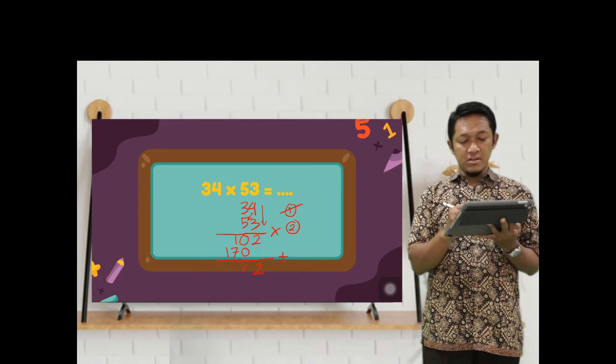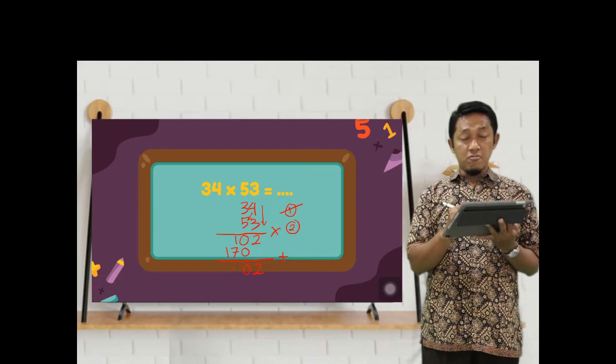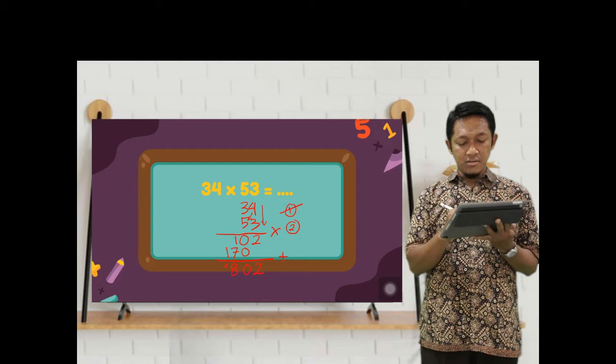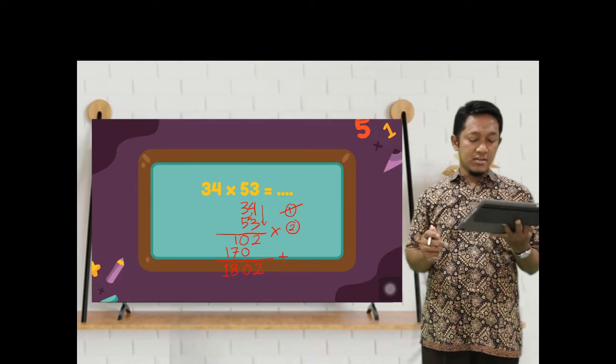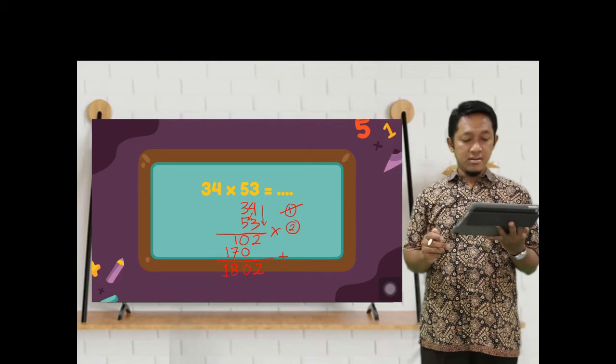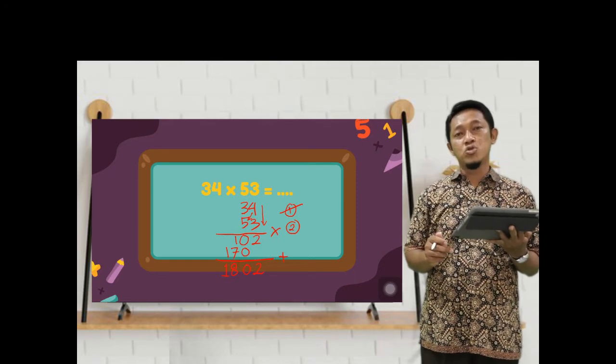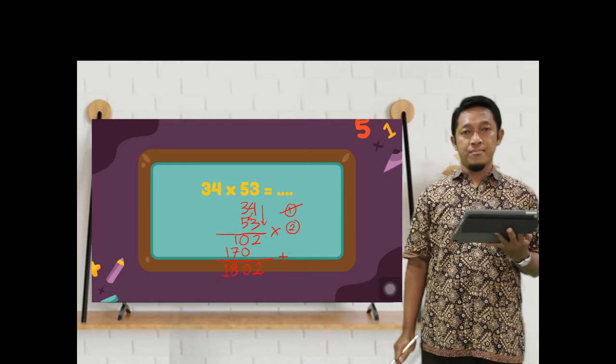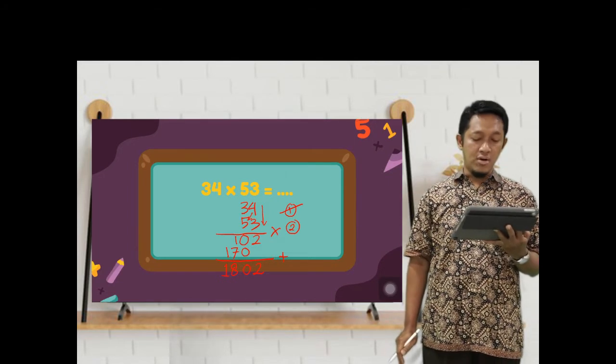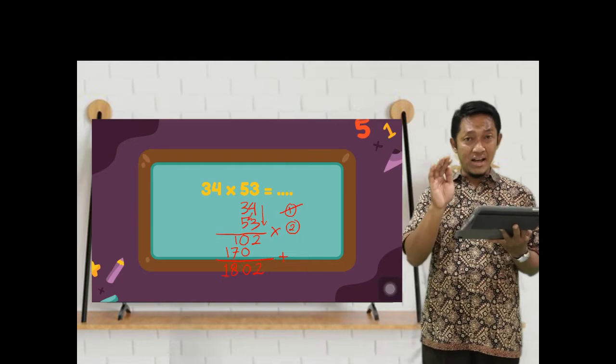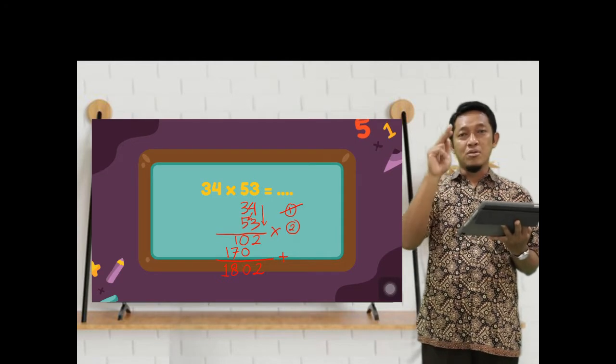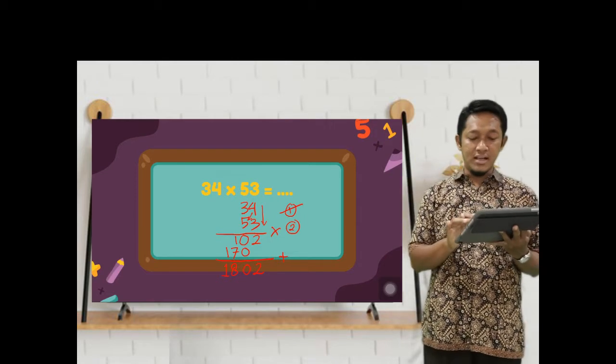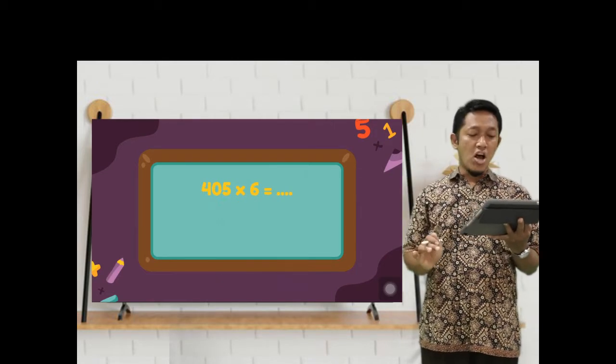Last step, add all of the numbers. 2 plus nothing, the result is 2. 0 plus 0 is 0. 1 plus 7, there will be 8 and 1. So the result is 1802. 1802. Easy, right? Please remember the trick: straight, diagonal, diagonal, straight.